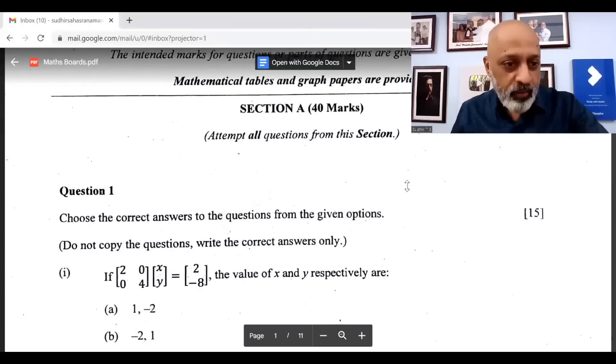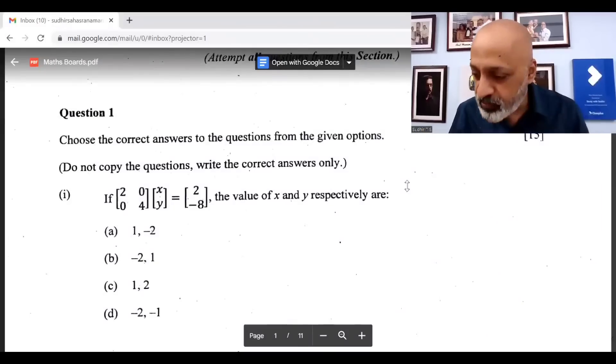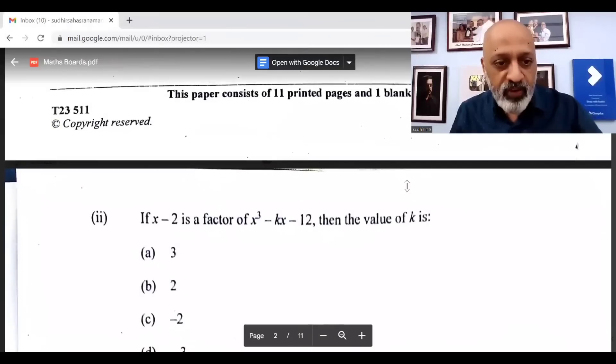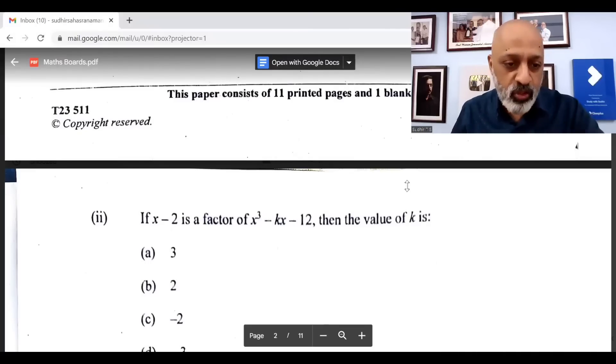Question number one, the correct option is A: 1 and minus 2. The second one: if X minus 2 is a factor of X³ minus KX minus 2, then the value of K is, the correct option is C: minus 2.